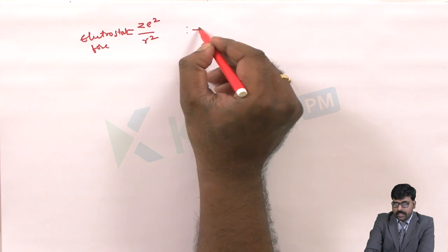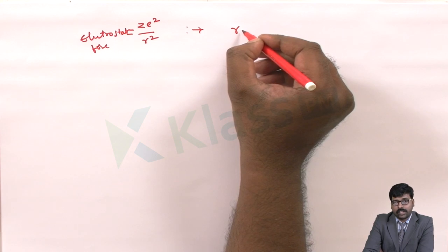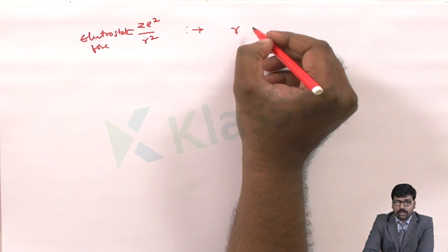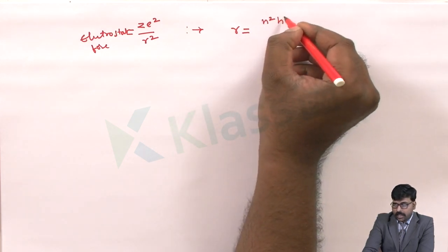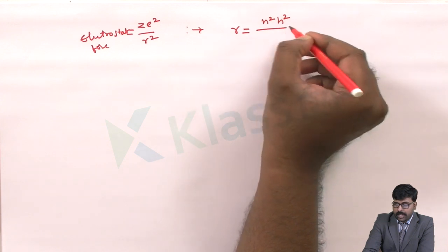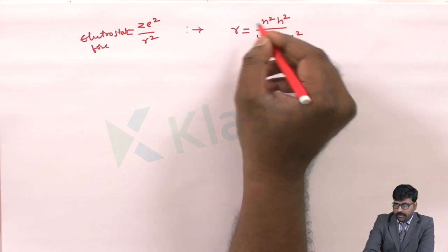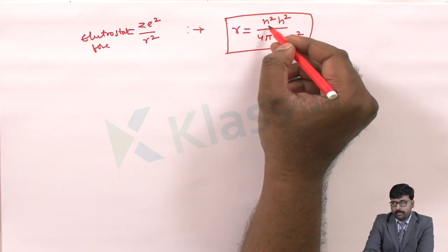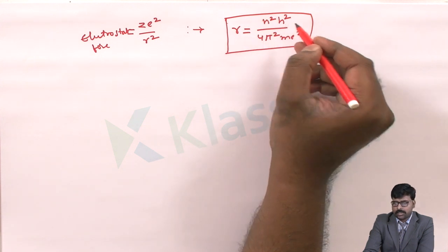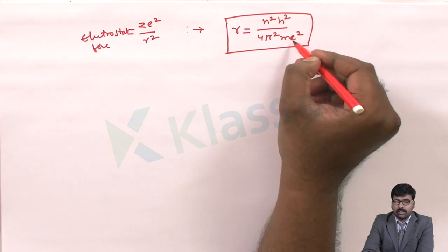Using this, he succeeded in calculating the radius of the electron — that is, the distance between the electron and the nucleus. He calculated it as: r = n²h² / (4π²me²), where n is the principal quantum number (the shell number), h is Planck's constant, m is the mass of the nucleus, and e is the charge on the electron.